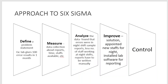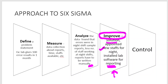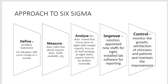Next is Improve — find and implement a solution. In this example, the solution is to appoint new staff for night shifts and install lab software for the reporting process to avoid manual errors. After implementing the solution, you record the outcome to find out the results of the improvement.